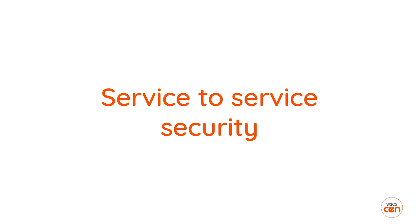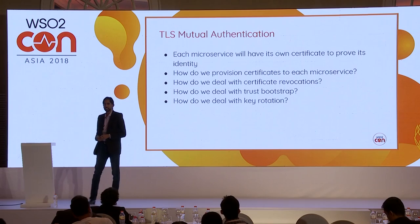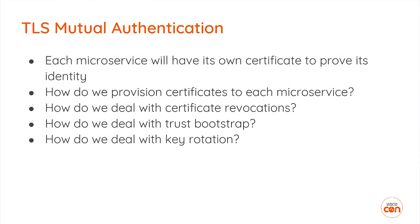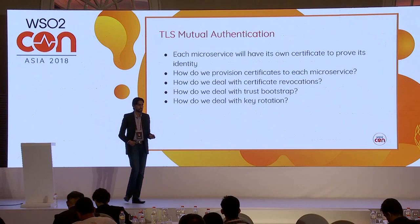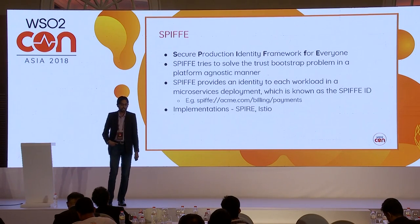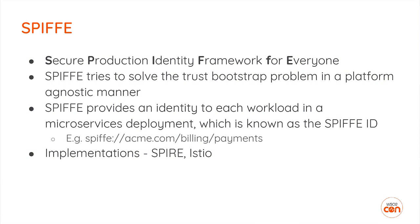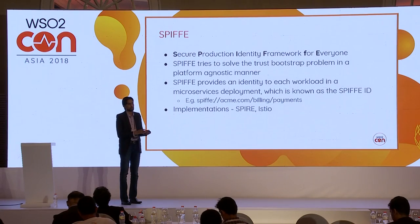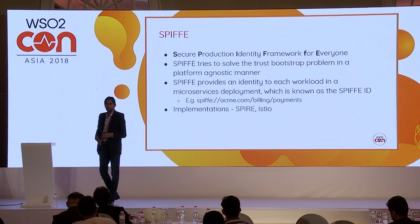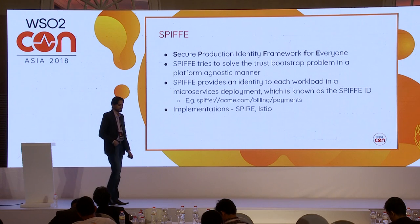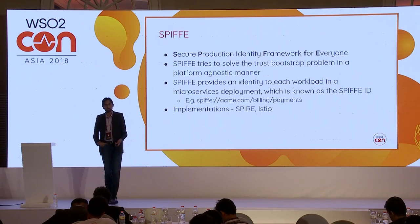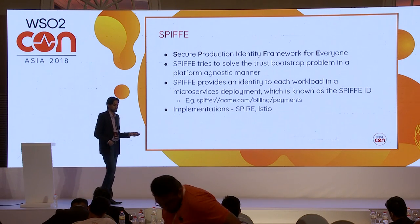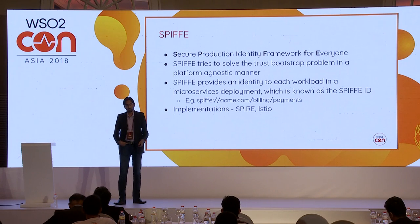For service-to-service security, TLS mutual authentication is the common approach from the monolithic world, but it has its own limitations — like token revocation, peer rotation, and trust bootstrapping. There is an interesting emerging standard called SPIFFE, which solves the initial trust bootstrapping problem in a platform-agnostic manner. You can exchange public keys among microservices or workloads in an automated manner using SPIFFE. SPIFFE has a couple of implementations, and Google's Istio microservice implementation has also implemented SPIFFE.